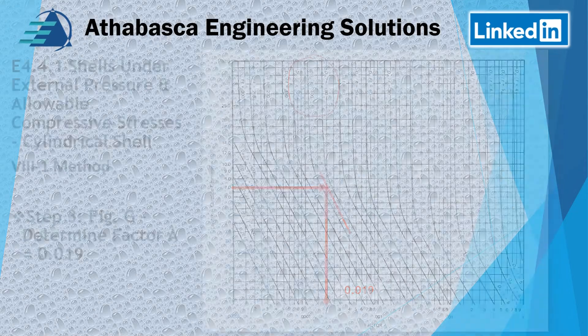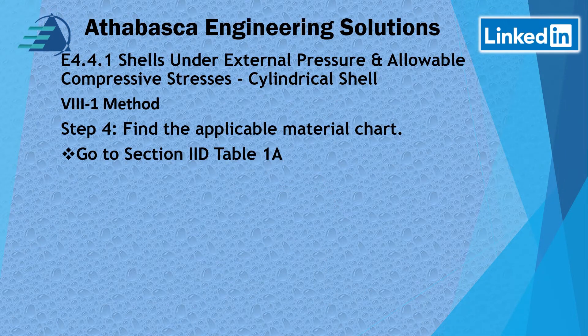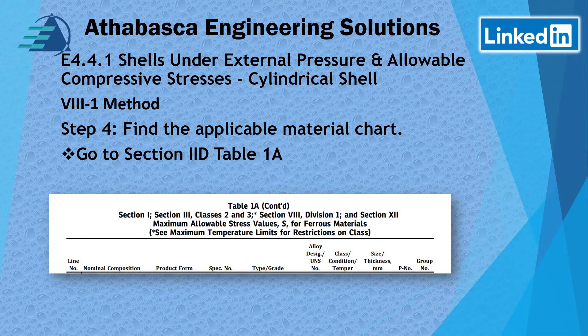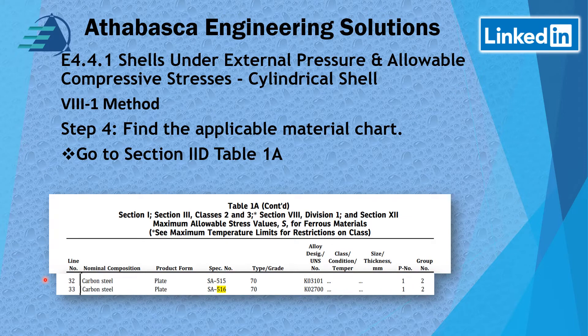Next, we go to the applicable material chart. We confirm which chart to use by looking in Table 1A in Section 2D. Looking it up for Section 8 Division 1 applicable specs, we find we need line 32. The way the pages are laid out, you have to go to another page, but we've identified line 32.